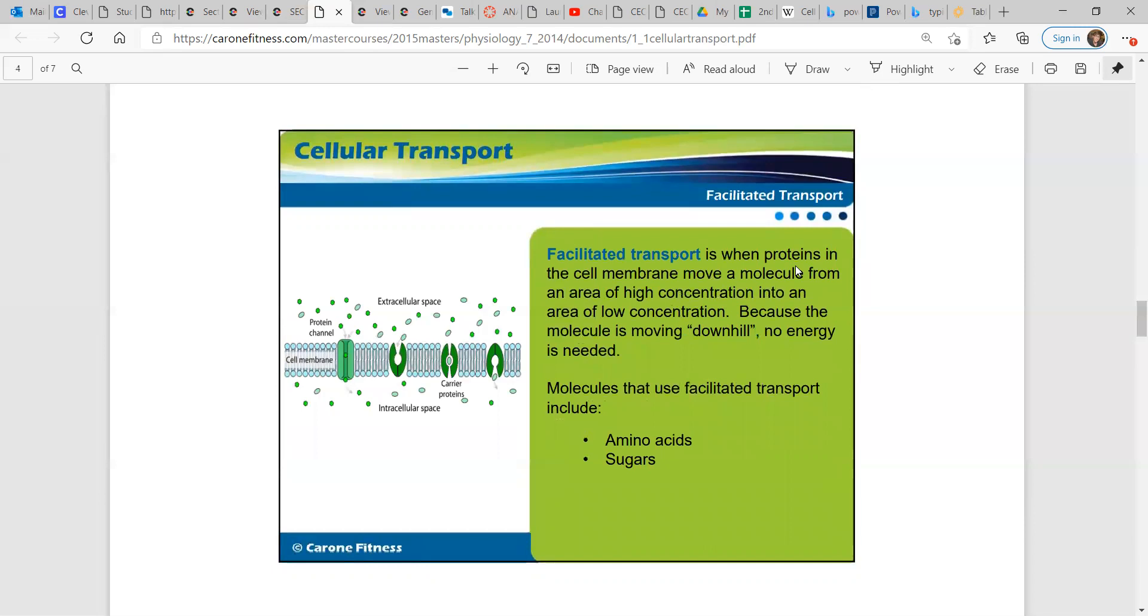Facilitated transport is when proteins in the cell membrane move a molecule from an area of high concentration into an area of low concentration. Because the molecule is moving downhill, no energy is actually needed. Molecules that use facilitated transport include amino acids and sugar. So in this diagram we have the extracellular space outside of the cell and the intracellular space inside the cell, and then we have these little protein channels.